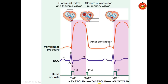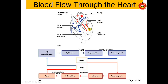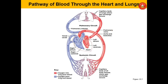Contraction of the ventricles is known as systole and relaxation as diastole. The blood flow through the heart: blood enters the right atrium through the superior vena cava, inferior vena cava, and coronary sinus; passes through the tricuspid valve to the right ventricle; through the pulmonary semilunar valve into the pulmonary trunk to the lungs; returns via pulmonary veins to the left atrium; moves to the left ventricle through the bicuspid valve; and exits through the aortic semilunar valve to the whole body via the aorta.